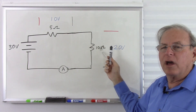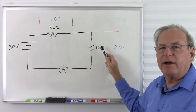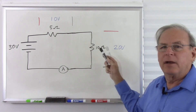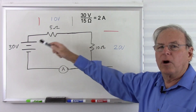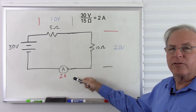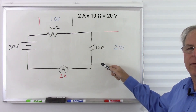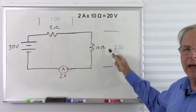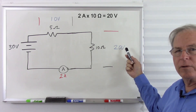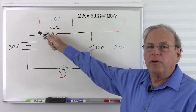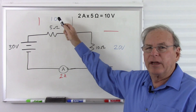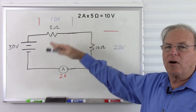Let's confirm with Ohm's Law. Total resistance is 10 plus 5 equals 15 ohms. Dividing 30 volts by 15 ohms gives us 2 amps. So 2 amps through 10 ohms: 2 times 10 equals 20 volts. And 2 amps through 5 ohms: 2 times 5 equals 10 volts. 10 volts plus 20 volts — it all adds up.